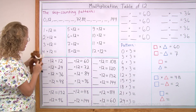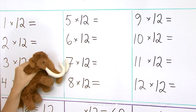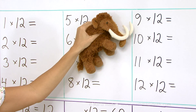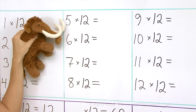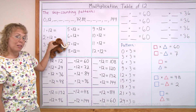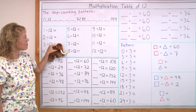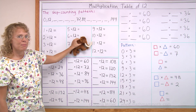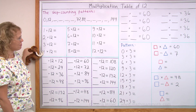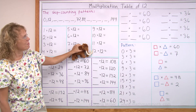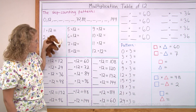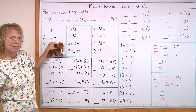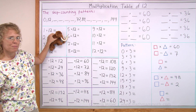Now your turn — Matthew's turn. Come on. 7 times 12? 12 times 12? 5 times 12? 8 times 12? 6 times 12? All right, good job.